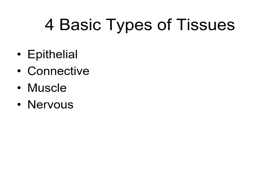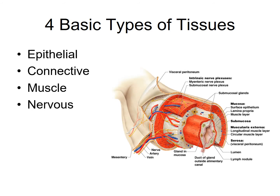If we were to look at any visceral organ such as, in this example, the small intestine, you would find all four basic types represented. You would find epithelial tissue lining the lumen — the hollow portion of the small intestine. You would also find epithelial tissue on the outer surface covering the small intestine. You'll learn later that epithelial tissues cover and line. You would find connective tissue shown here in layers of white tissue, binding one tissue to another.